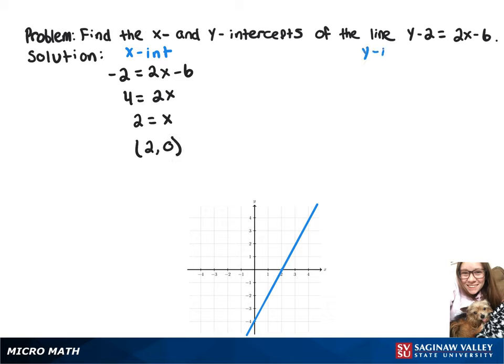Now to find our y-intercept, when we sub 0 in for x, we get y minus 2 equals negative 6. And then adding 2 to both sides gives us y equals negative 4. So our y-intercept is 0, negative 4.